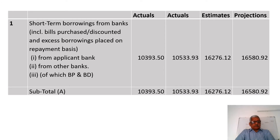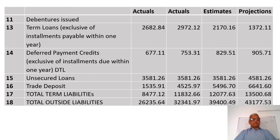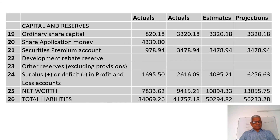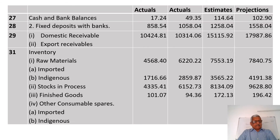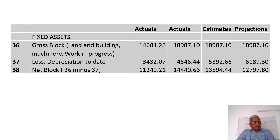Now let us move on to Form No. 3. Here again there are 5 columns: particulars, actuals for the year before last and the last year, current year estimates, and projections. It covers short-term borrowing from the bank, other current liabilities, total current liabilities, term loan, total term liabilities, total outside liabilities, net worth, capital and reserves, total liabilities, and then current assets including cash and bank balances, fixed deposits, domestic and export receivables, and inventory details.